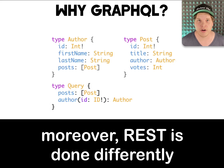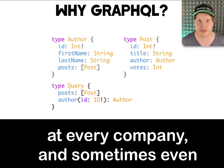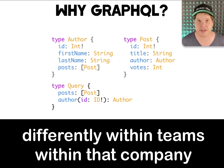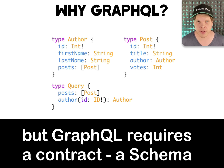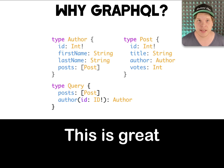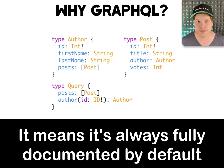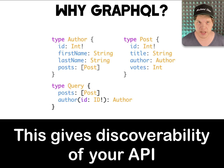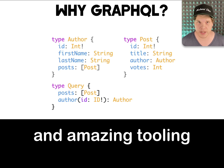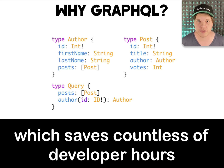Moreover, REST is done differently at every company and sometimes even differently within different teams within that company. But GraphQL requires a contract — a schema. This is great. It means it's always fully documented by default. This gives discoverability of your API and amazing tooling which saves countless developer hours.